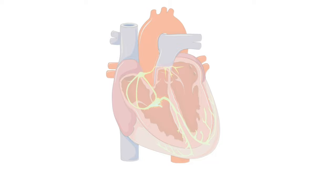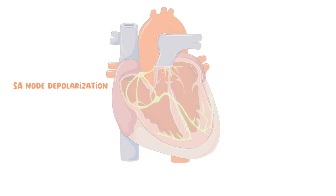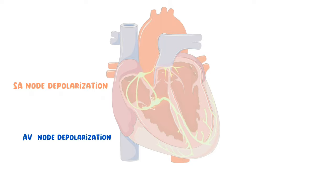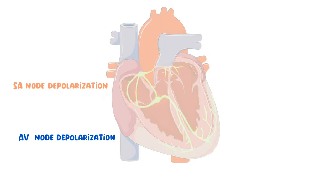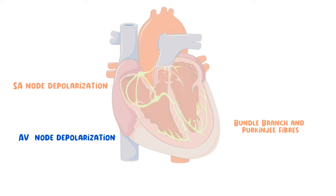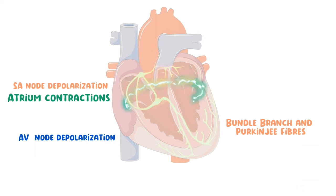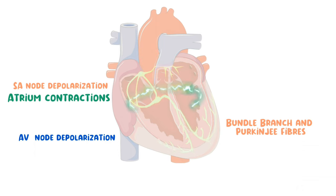When the SA node depolarizes, it sends a signal to the AV node through electrical impulses, causing the AV node to depolarize and send a signal to the bundle of His, bundle branches, and Purkinje fibers. The transfer of the electrical signal from the SA node to the AV node causes atrium contraction. The signal from the AV node to the bundle branches and Purkinje fibers causes ventricle contraction, and when there is no charge, it causes complete cardiac rest.